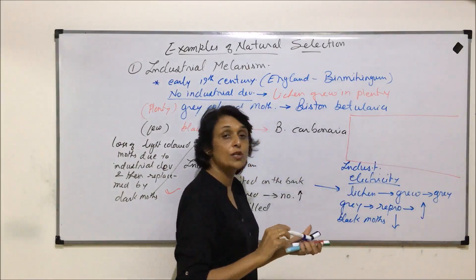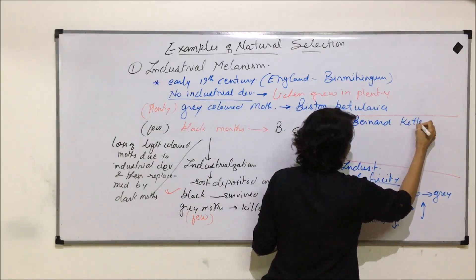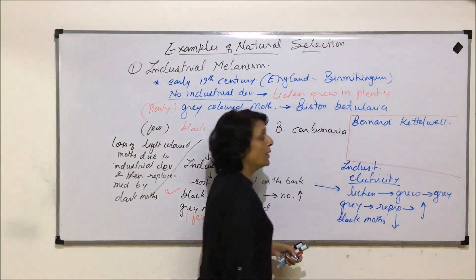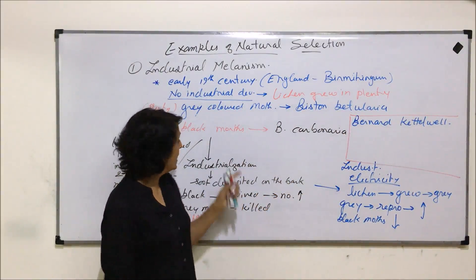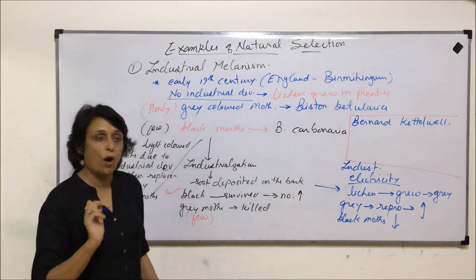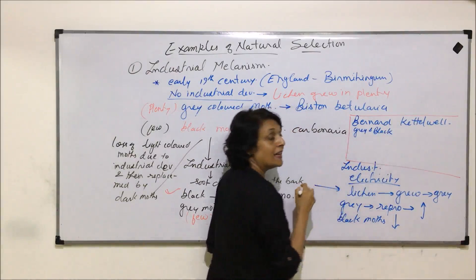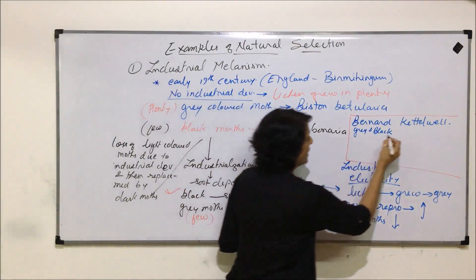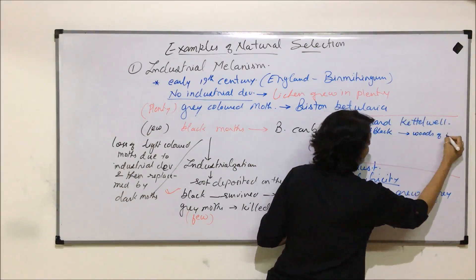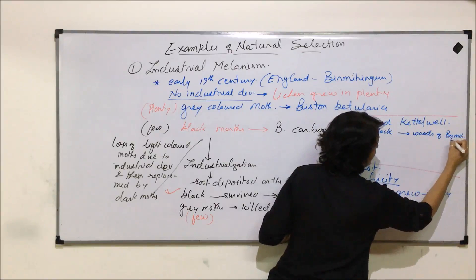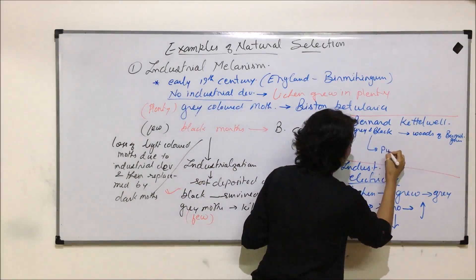The same thing was experimentally tested by a scientist named Bernard Kettlewell. He tested industrial melanism by taking both gray and black moths and introducing them into two areas: one area was the woods of Birmingham, and the other was a very polluted area.